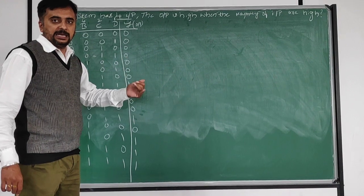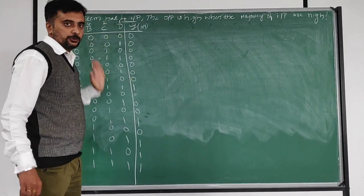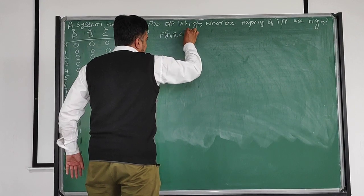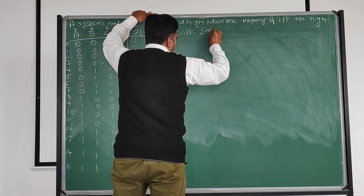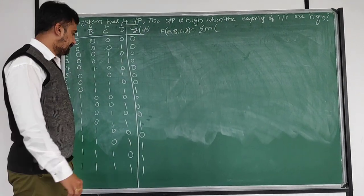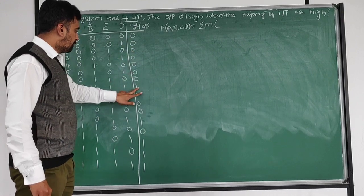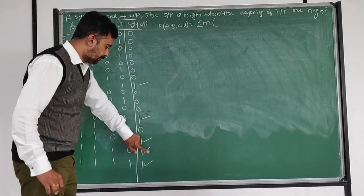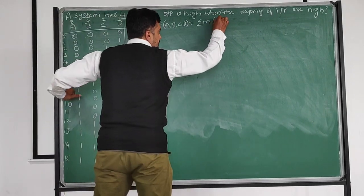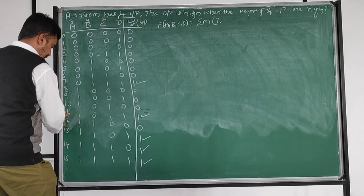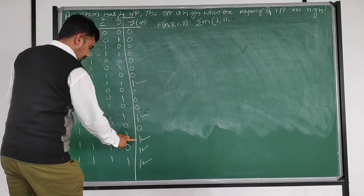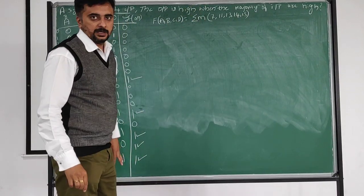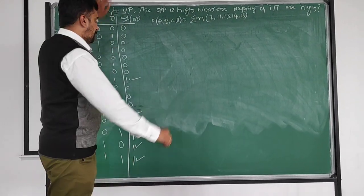Next, write a K-map for the given truth table. Y of A, B, C, D is equal to summation M of: wherever there is a 1 in the output - that is minterms 7, 11, 13, 14, 15. This is the input to design a K-map.